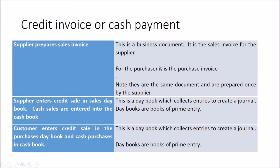Once goods are delivered, the supplier wants to be paid. The supplier prepares a sales invoice — a business document. The seller creates the sales invoice; a copy is given to the buyer, who calls it a purchase invoice. It's the same document: a sales invoice for the seller and a purchase invoice for the buyer. The buyer doesn't create their own separate purchase invoice — the supplier provides it, and it carries the supplier's VAT number for the purposes of payment and VAT recovery.